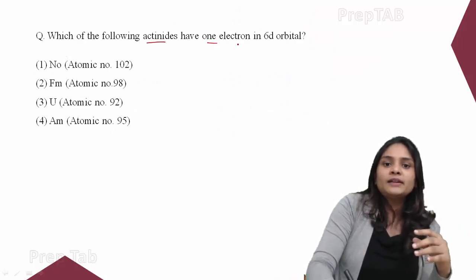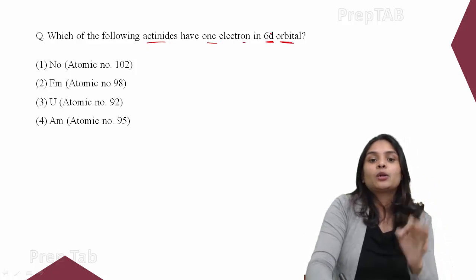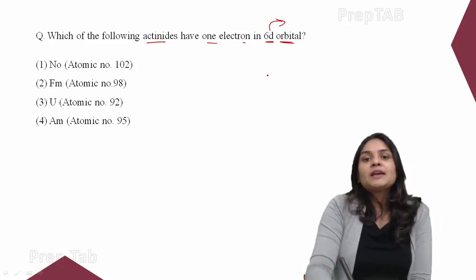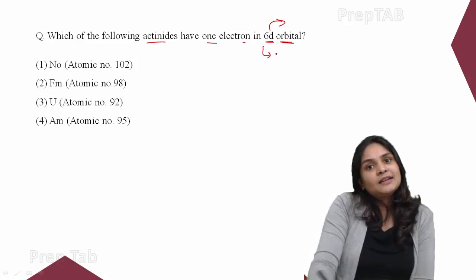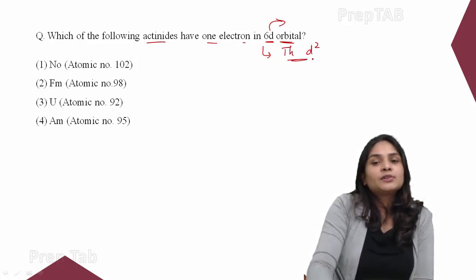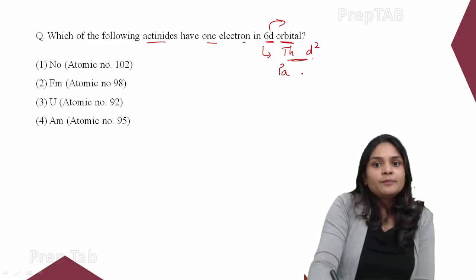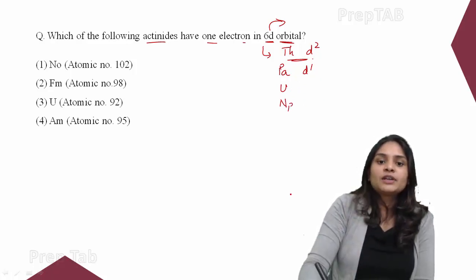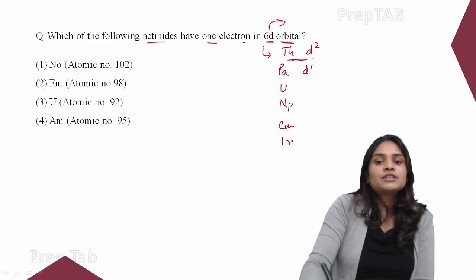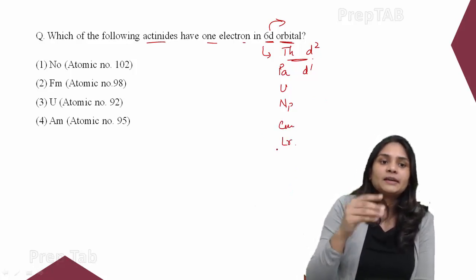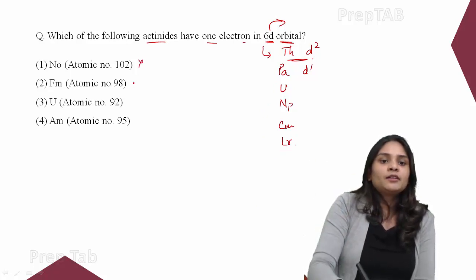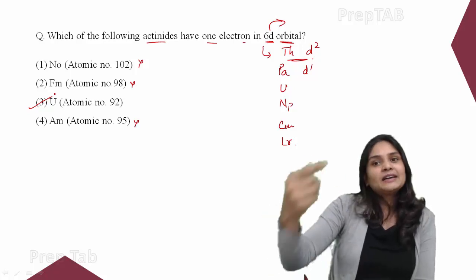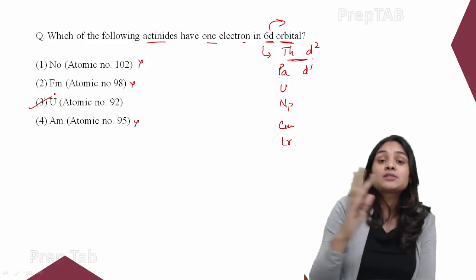Second exam question: which of the following actinides has one electron in the 6d orbital? We know thorium has 6d², while protactinium, uranium, and neptunium each have 6d¹. Then curium has 6d¹, and lawrencium has 6d¹. Nobelium, fermium, and americium do not have any 6d electron. So uranium is among those with one 6d electron — if it appears in the options, that is your answer. This question takes only 10 seconds if you remember the configurations.